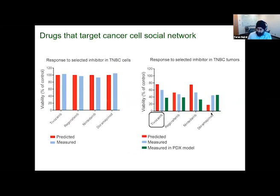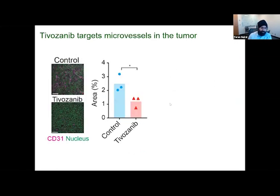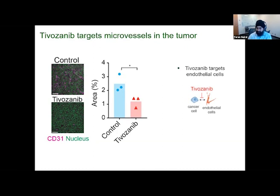Briefly, I'll also tell you how Tivozanib works. This drug also does not kill cancer cells — almost 100% by our model prediction and measurements — but it does kill the tumor slices. It turns out there are these microvessels I showed earlier in some of the images. Tivozanib targets these microvessels — it doesn't target cancer cells. You can see many of these purple microvessels are virtually gone from the tumor slice. By targeting these microvessels, which provide nutrients to the cancer cells, Tivozanib is effective at reducing the growth of cancer cells. Again, Tivozanib works by targeting the interaction between microvessels or endothelial cells and cancer cells.